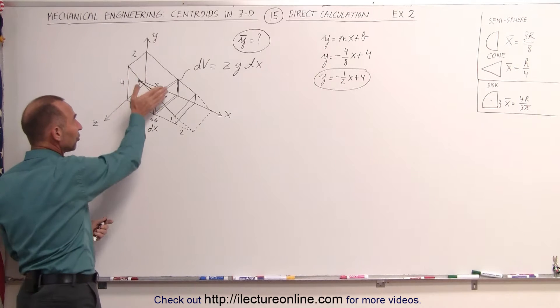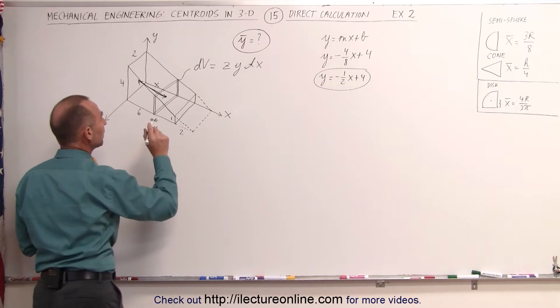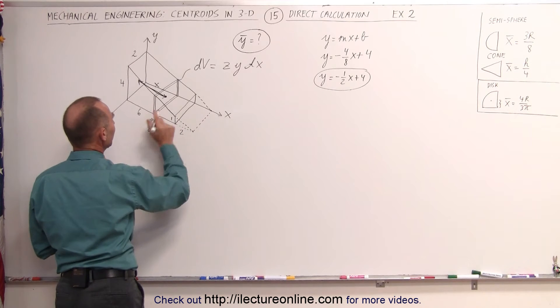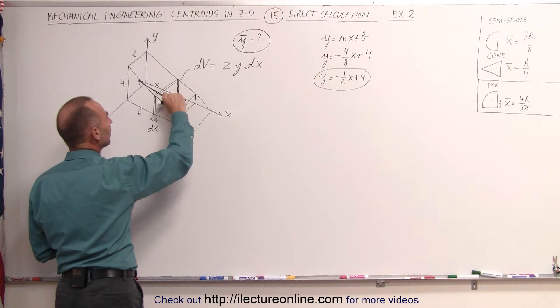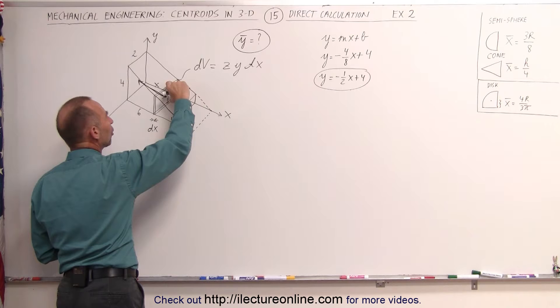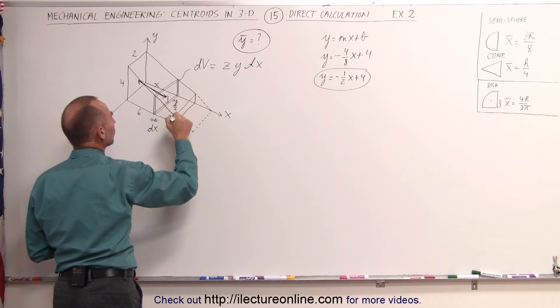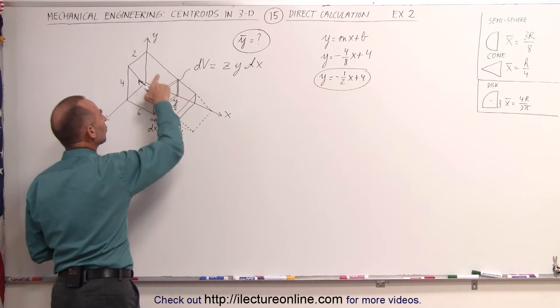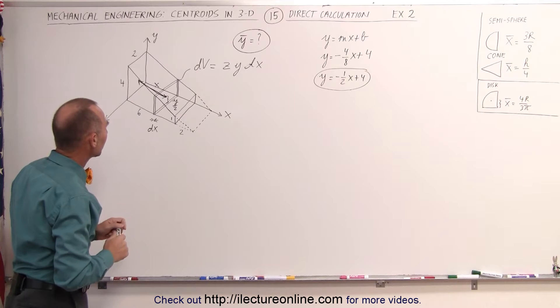Again, we take a small little slice of this cutoff wedge, but in this case the y-coordinate of the centroid would be the distance from the xz-plane to the center of this dv, this small little volume element, that would be here this height, which is half the height of the total volume, and therefore this would be equal to y divided by 2, half the distance from the xz-plane to the top of this wedge-shaped object.